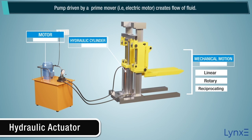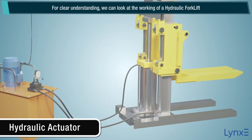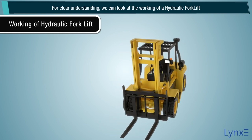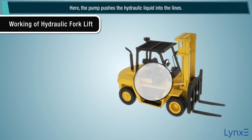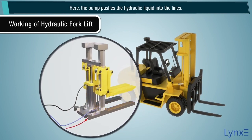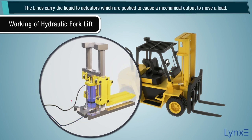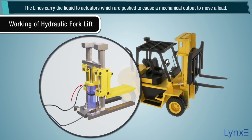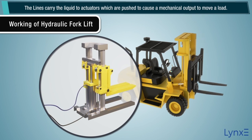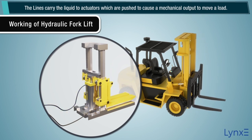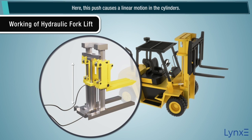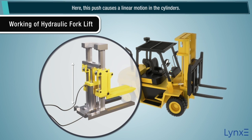A pump, driven by a prime mover — that is, an electric motor — creates the flow of fluid. For clear understanding, we can look at the working of a hydraulic forklift. The pump pushes the hydraulic fluid into the lines. The lines carry the fluid to actuators, which are pushed to cause a mechanical output to move a load. This push causes a linear motion in the cylinders.